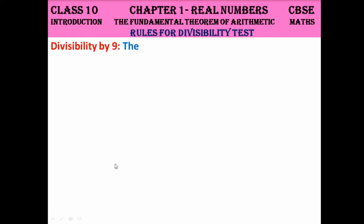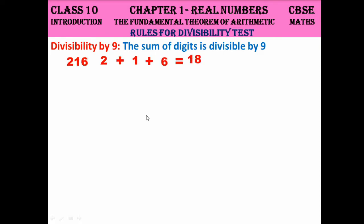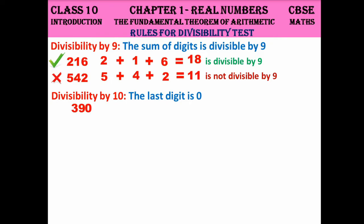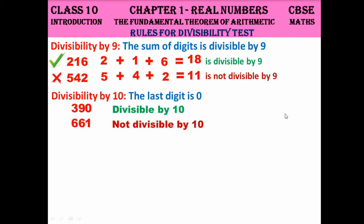Divisibility by 9 is similar to divisibility by 3: if the sum of digits is divisible by 9, then the number is divisible by 9. For example, if the sum of digits is 18, which is divisible by 9, the number is divisible by 9. If the sum is 11, which is not divisible by 9, the number is not divisible by 9. For divisibility by 10: the last digit must be 0. For example, 390 ends in 0, so it is divisible by 10. But 661 ends in 1, so it is not divisible by 10.